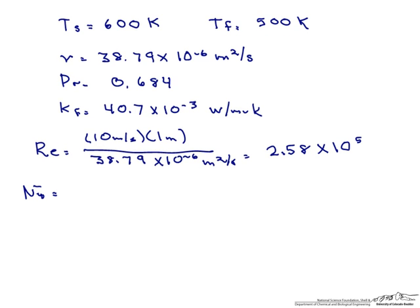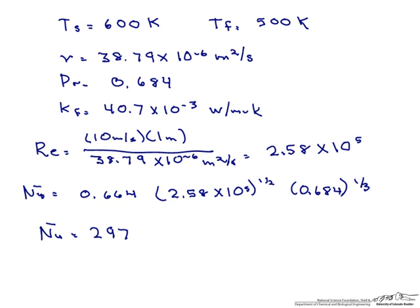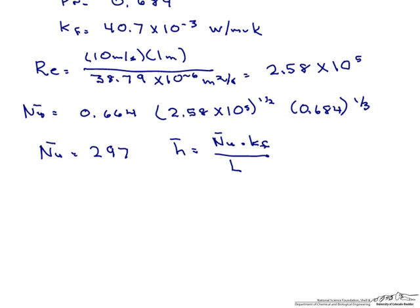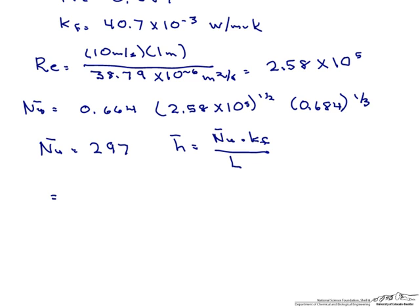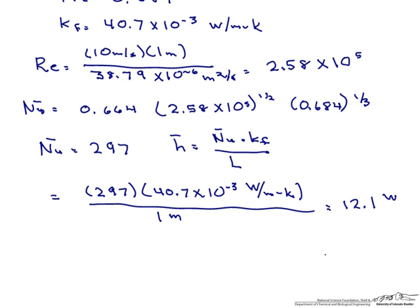Our Nusselt number equals 0.664 Reynolds raised to the one-half times the Prandtl number raised to the one-third. And if we do that, we find that our Nusselt number equals 297. So now we use that Nusselt number to find our heat transfer coefficient using again the definition of the heat transfer coefficient. So our h-bar equals 12.1 watts per meter squared K.